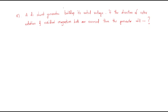Hello everyone. In this session we will discuss some more problems. These problems are similar to the previous ones. The problem is: a DC shunt generator builds up its rated voltage. If the direction of the rotor rotation and residual magnetism both are reversed, then how will the generator operate?